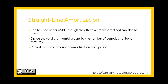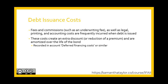The result of straight-line amortization would be the same amount of amortization in each period. When looking at debt issuance costs — the fees and commissions such as underwriting fees, legal fees, printing, and accounting costs — these are all frequently incurred when debt is issued. These costs create an extra discount or a reduction of a premium and are amortized over the life of the bond. They are recorded in an account referred to as deferred financing costs, and they are amortized using the same method as the bond discount or premium.